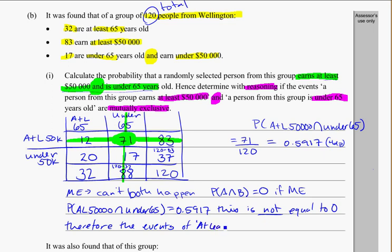at least $50,000 and under 65 are not mutually exclusive.